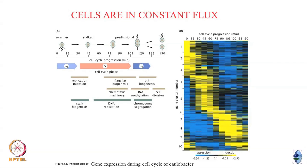In reality, the number of copies of a particular protein inside the cell is continuously changing. There is a figure that tries to estimate that. This is Caulobacter, a bacteria, and this shows the cell cycle of that bacterium.